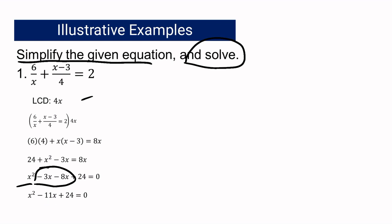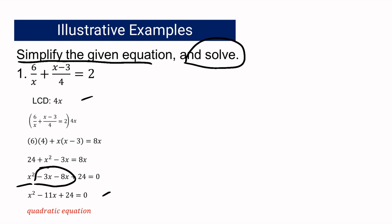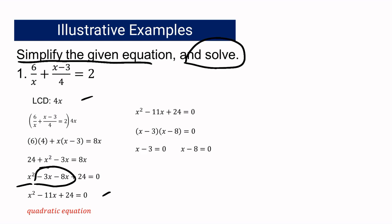As we simplify the rational algebraic expressions, the resulting equation is actually a quadratic equation. Our resulting equation is X squared minus 11X plus 24 equals 0. To solve it, since this is factorable, the correct factors are (X minus 3) and (X minus 8), because negative 3 times negative 8 is positive 24, and negative 3 plus negative 8 is negative 11. Using the zero product property, X sub 1 is 3 and X sub 2 is 8.